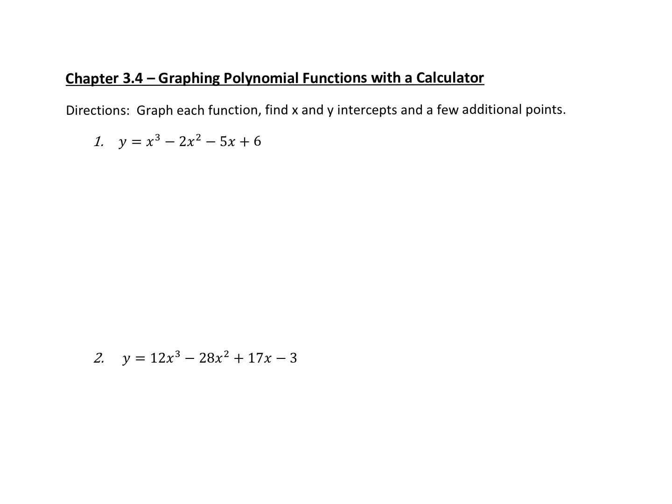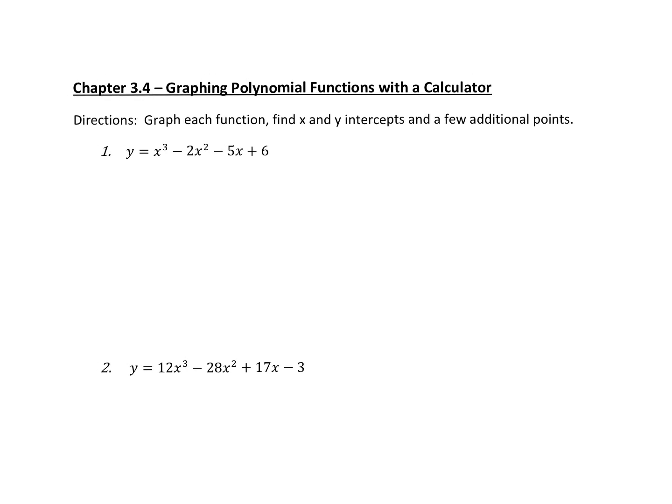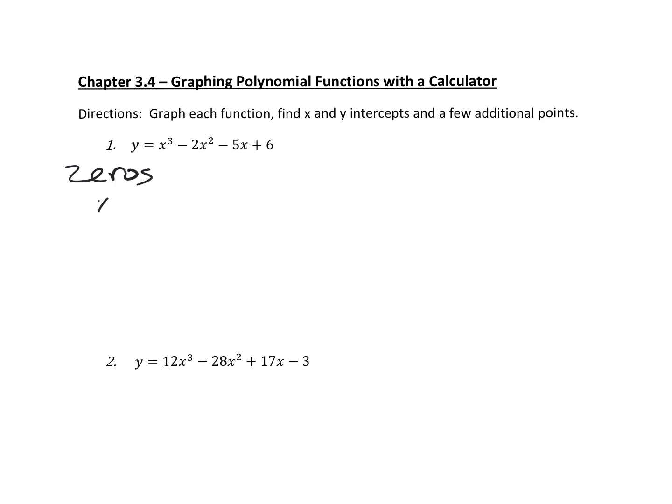For this particular first example, once I keyed it into my calculator, I found that my zeros were all rational. I actually had zeros located at x equals one, x equals three, and another zero at x equals negative two. If all your zeros are rational, not only by looking at the display, you could also look at the table of ordered pairs.